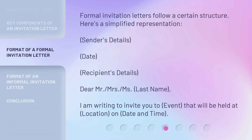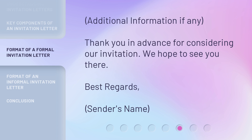Formal invitation letters follow a certain structure. Here's a simplified representation: Sender's Details, Date, Recipient's Details. 'Dear Mr. or Mrs. [Last name], I am writing to invite you to [event] that will be held at [location], on [date] and [time]. [Additional information if any.] Thank you in advance for considering our invitation. We hope to see you there. Best regards, [Sender's Name].'